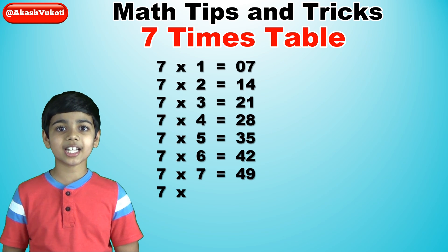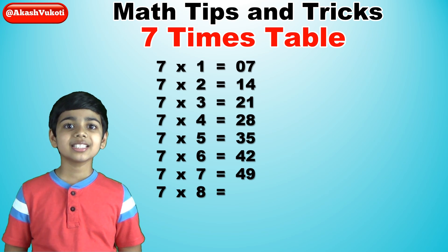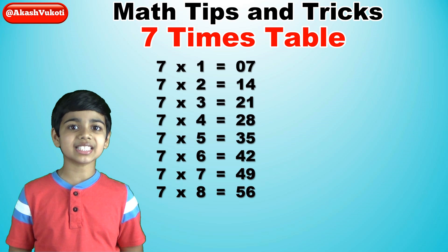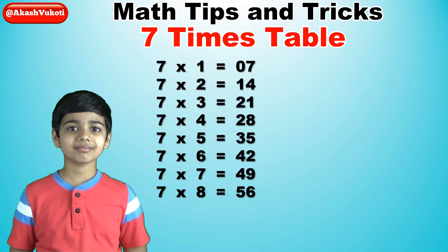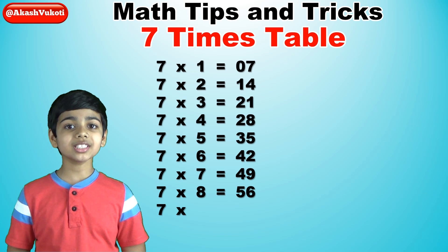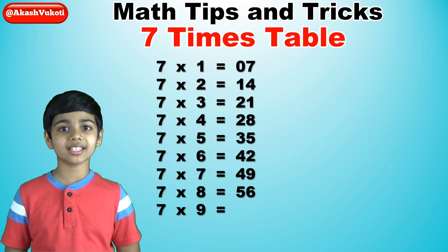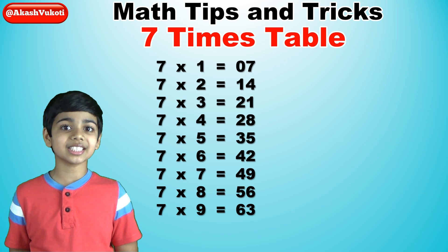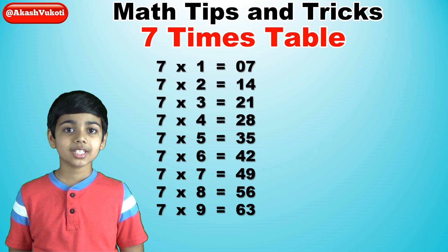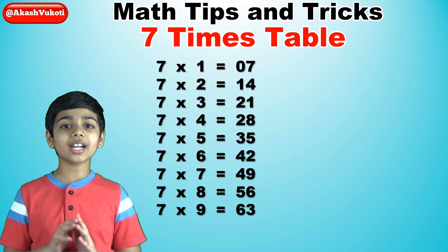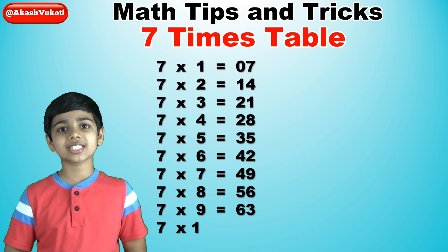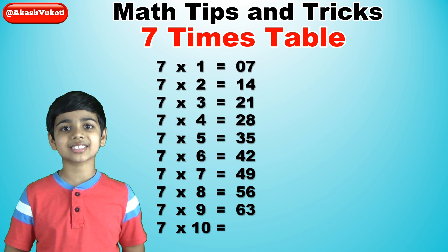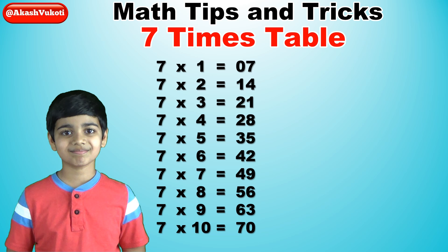Seven times eight is fifty-six. Seven times nine is sixty-three. And finally, seven times ten is seventy.